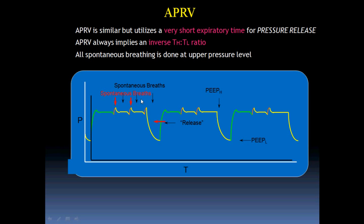That's airway pressure release ventilation. You ventilate the patient at the high level of CPAP for a longer time, and the lower level — usually about one second — is meant for exhalation. If the patient wants to take an inspiration, they take it at the upper level because that is the CPAP level.